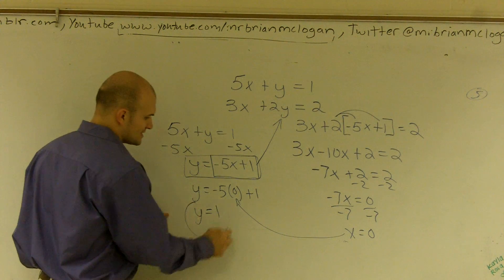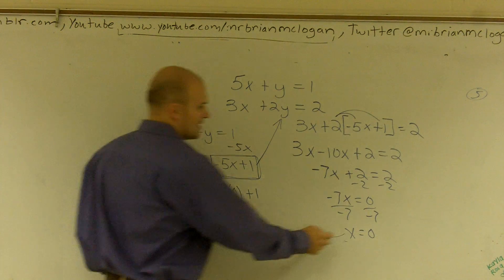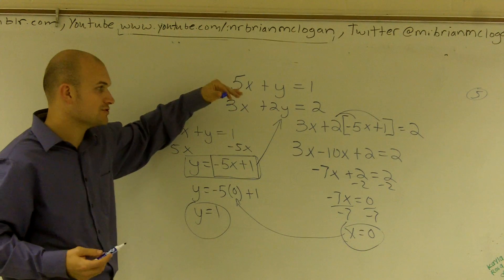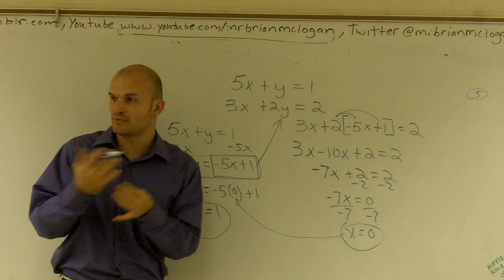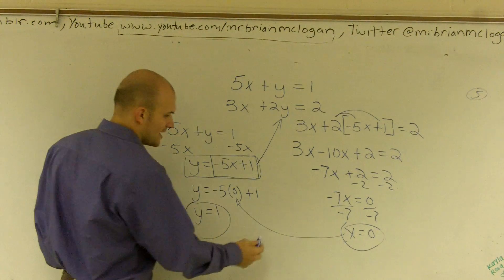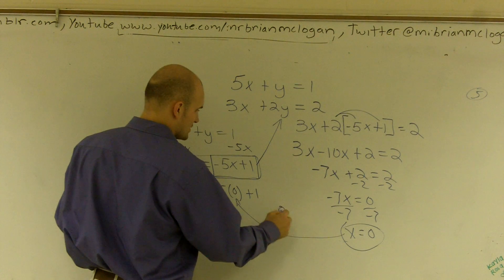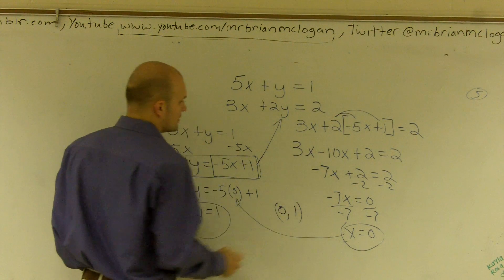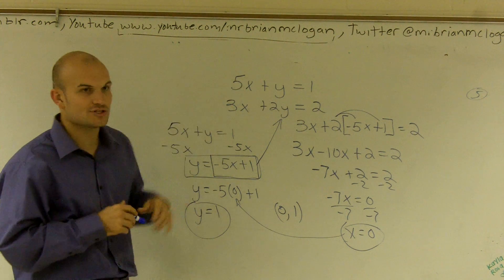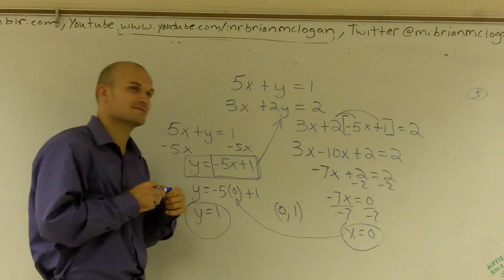Therefore, now what I have just done is I have found the value of y and the value of x by using substitution. So that is going to be the intersection when we talk in graphing. That's going to be the intersection of these two graphs. And I can write it as a coordinate point of 0 comma 1 is the solution of these two graphs of the system.